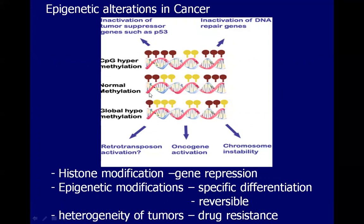In this illustration, we see the presence of methylation — it can be hyper or hypo. When we have hypermethylation, it can inactivate tumor suppressor genes or DNA repair genes. If we have hypomethylation, it would lead to chromosomal instability, oncogene activation, or the formation of retrotransposons, which are genetic elements that can induce mutation. With regards to histone modification, this is associated with gene repression and most probably with tumor suppressor genes.